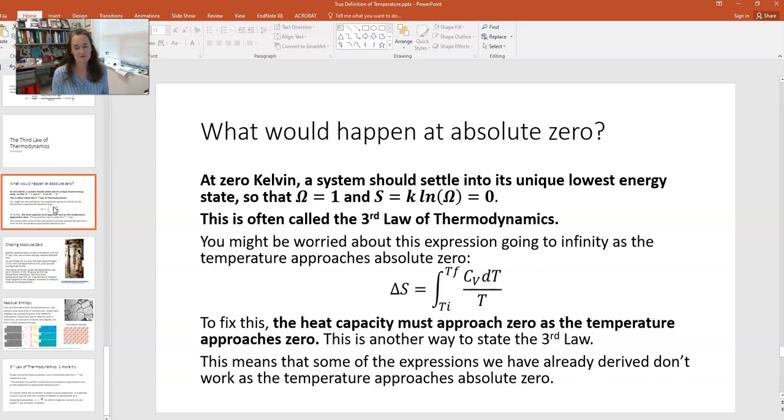All right, now, based on some of our other lectures, you might be worried about this expression going to infinity as the temperature approaches absolute zero. And remember, this was in the last lecture. We talked about how the change in entropy delta S is equal to the integral of Cv dt over T. So then you have the natural log of T final over T initial. Things get crazy, in other words.